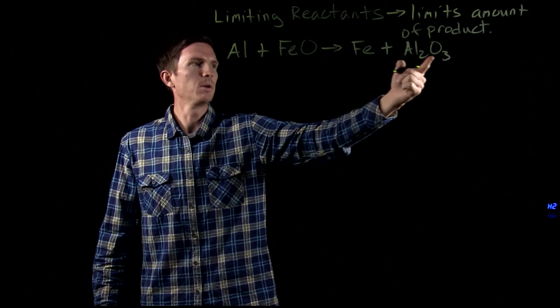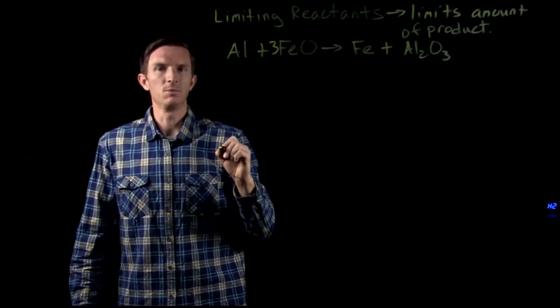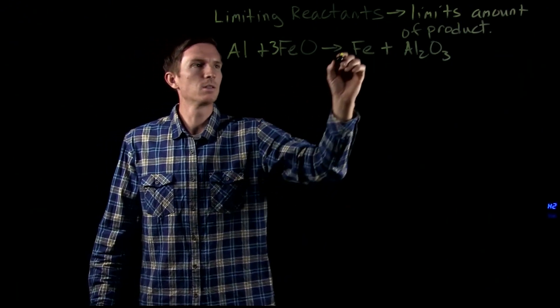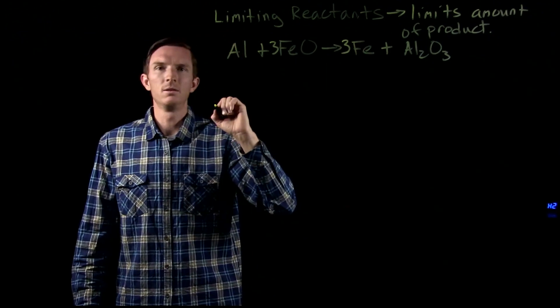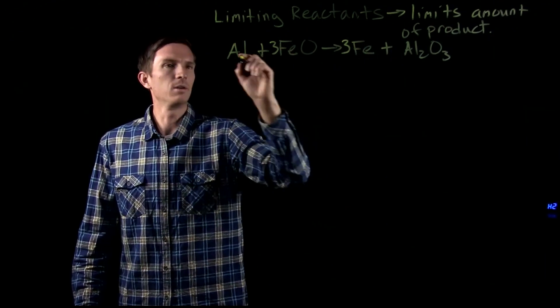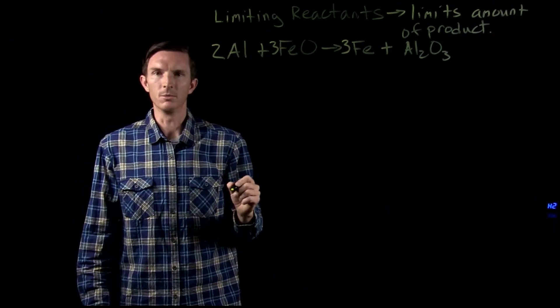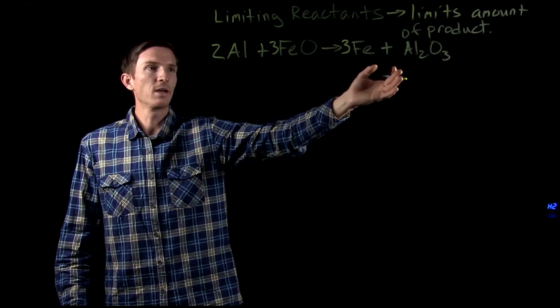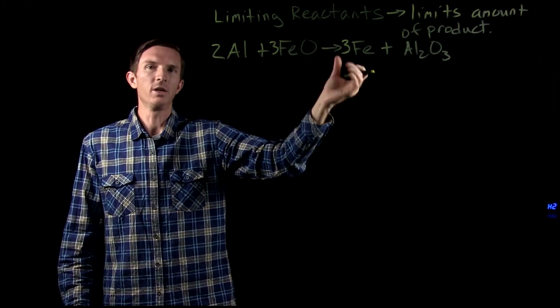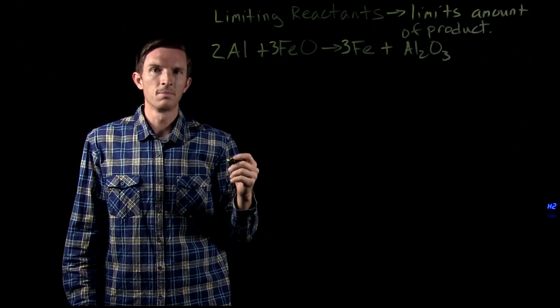Let's go ahead and balance this. Looks like we got three oxygens here, so we need three oxygens with our iron oxide, then we got three elemental iron, and then we go back to our aluminum, we need two aluminum. So now we have our balanced reaction, we have the ability to relate reactants with each other and the reactants with the products.